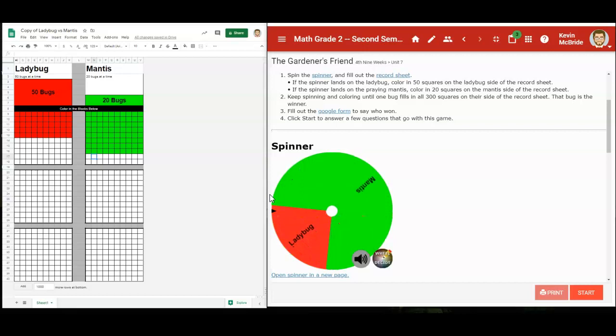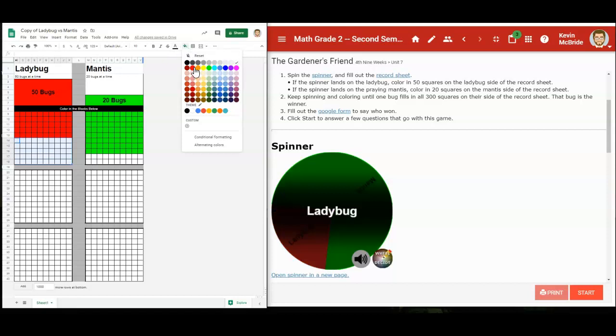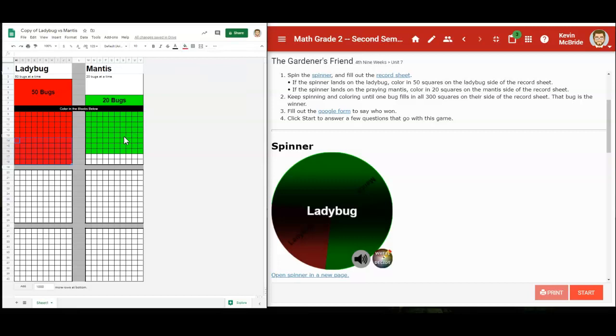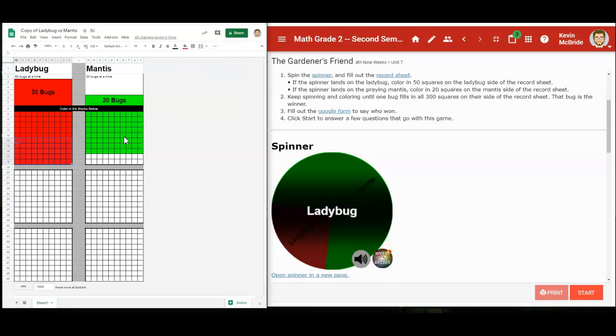It looks like it landed on the ladybug, so I'm going to color in the rest of the ladybug squares here. Since I played only to 100 this time - you're going to play to 300 - but since I played to 100, I do have a winner here.